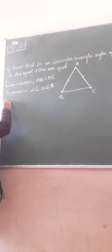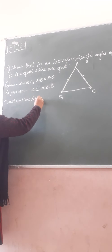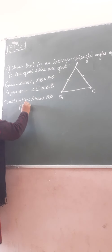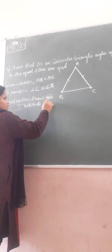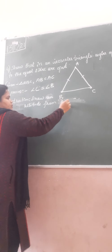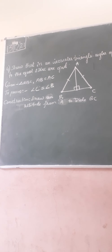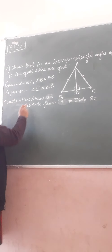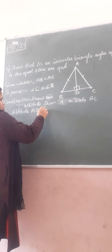Now, what do we have to do with construction? Draw AD — draw an altitude from A to side BC. This altitude makes a 90-degree angle on the opposite side. The altitude AD is drawn on BC.